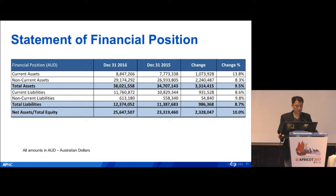That's our statement of financial position. We have a pretty healthy financial position. Until the end of 2016, our total net asset is $25.6 million Australian dollars — an increase of 10% compared to last year.